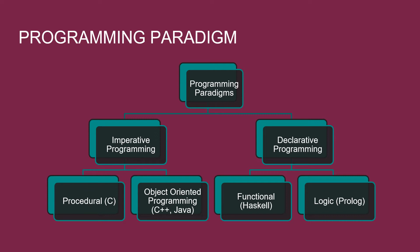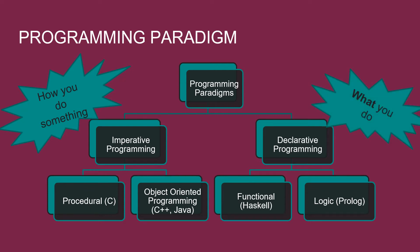Imperative Programming is like how you do something and Declarative Programming is more like what you do. Imperative explicitly tells the computer how to accomplish tasks by describing sequence of steps, and Declarative describes what a program should accomplish without knowing how it will be done.